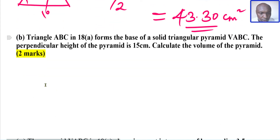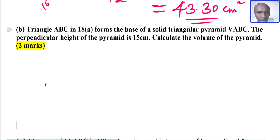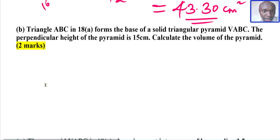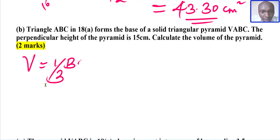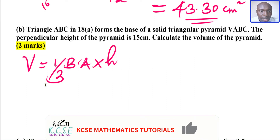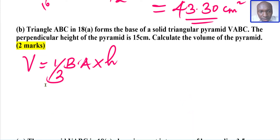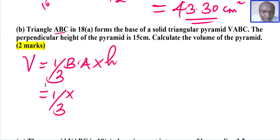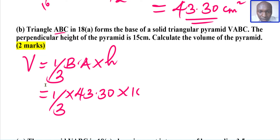For the second part of the question, you're required to find the volume of the pyramid. The volume of a pyramid is given by one third times base area times height. In this case, the base of the pyramid is the triangle we just calculated, so the base area is 43.30 cm². We get one third times 43.30 times the height of the pyramid, which is 15 cm.